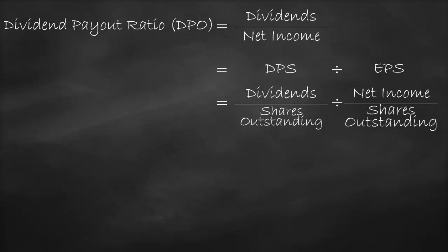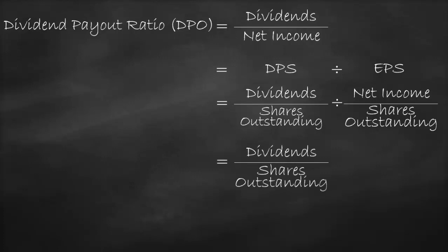Since we divide a ratio by a ratio, we can swap the numerator with the denominator and change the division sign with the multiplication sign. So, the dividend payout ratio equals Dividends divided by Shares Outstanding, multiplied by Shares Outstanding divided by Net Income.